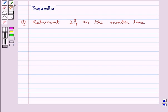Hello and welcome to the session. In this session we discuss the following question which says represent 2 and 3 upon 4 on the number line.